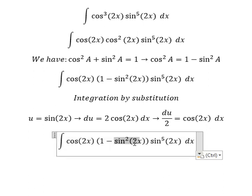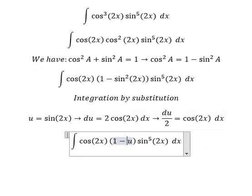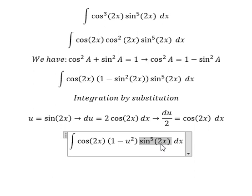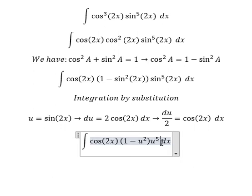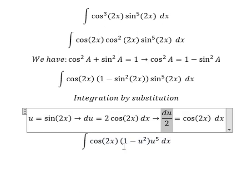So this integral we change by u and we have u squared, this one we change by u and we have u to the power of 5, and cosine 2x dx we change by du over 2.